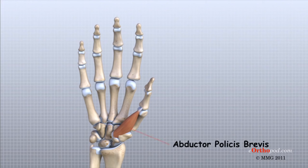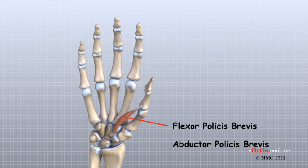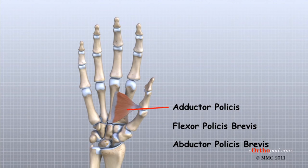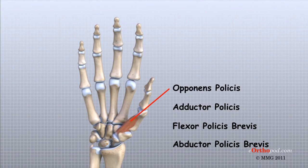The thenar muscles include the abductor pollicis brevis, flexor pollicis brevis, adductor pollicis, and opponens pollicis. Pollicis is the Latin term for thumb. Each of these muscles begins at the wrist and each has a tendon that attaches to a different location on the base of the proximal phalanx of the thumb. Their names give a suggestion of what they do when they contract.